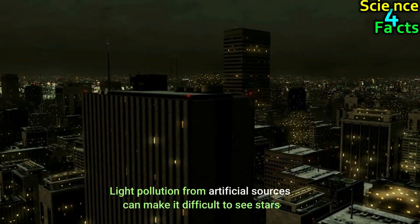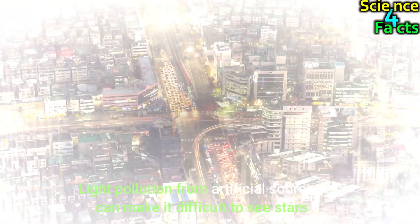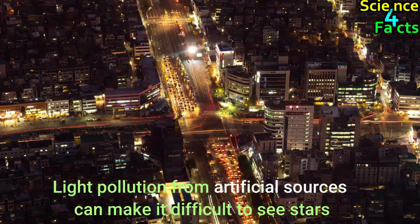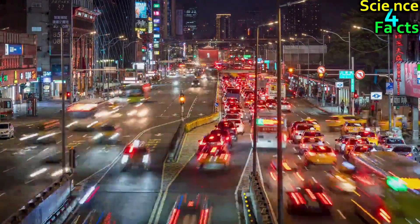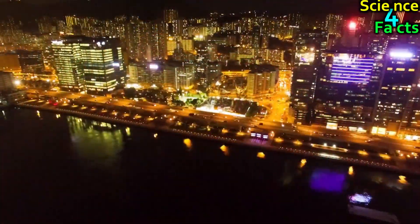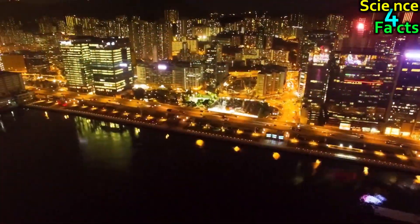Lastly, light pollution from artificial sources can make it difficult to see stars. In heavily populated areas, artificial lighting from streetlights, buildings, and other sources can create a glow that obscures the stars in the sky.